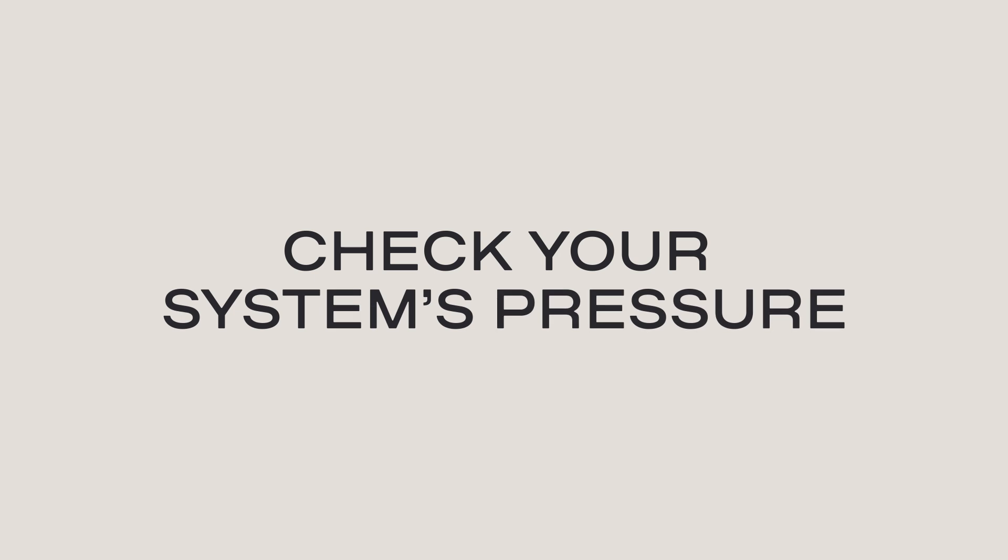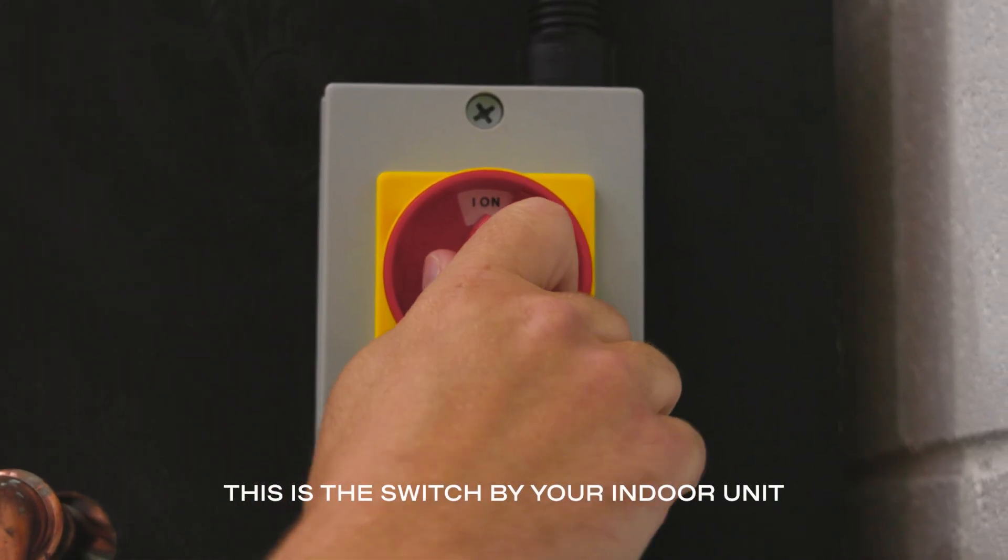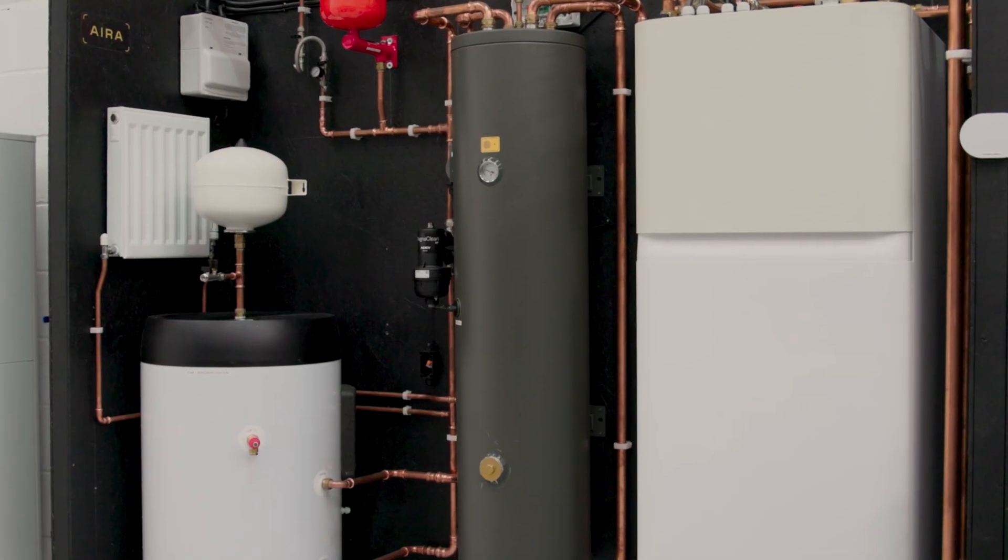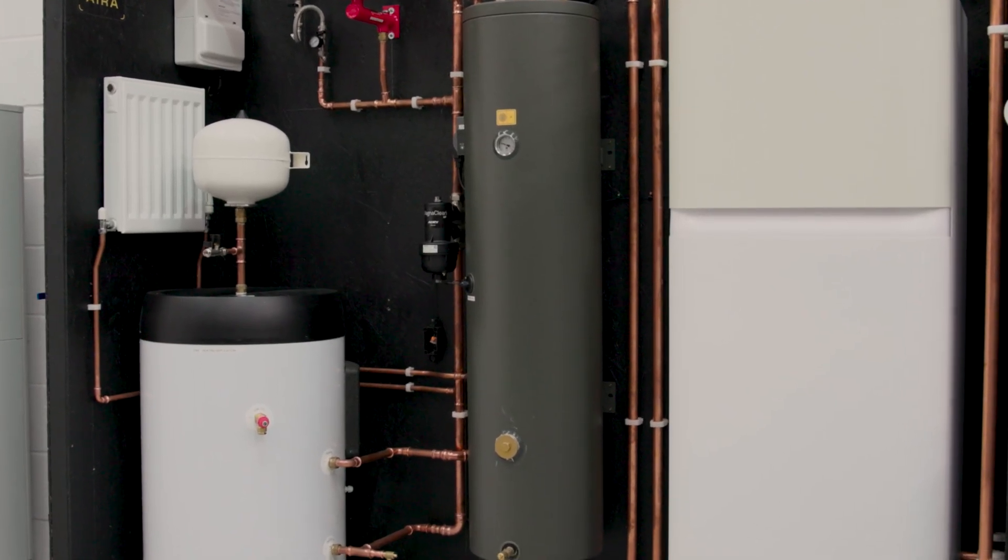Here's how to check the system pressure on your heat pump system. To check the pressure of your heating system, start by turning off your central heating and hot water. It's important to let the system cool down before you do anything else.